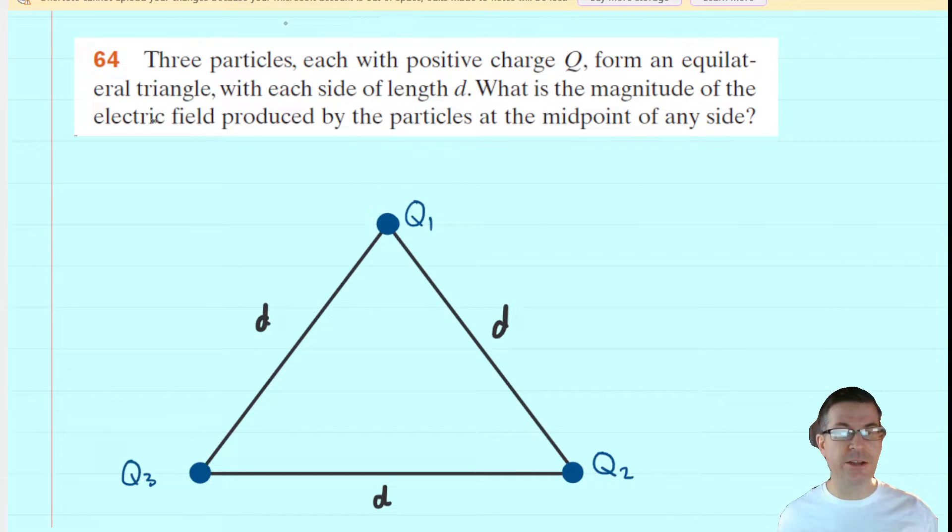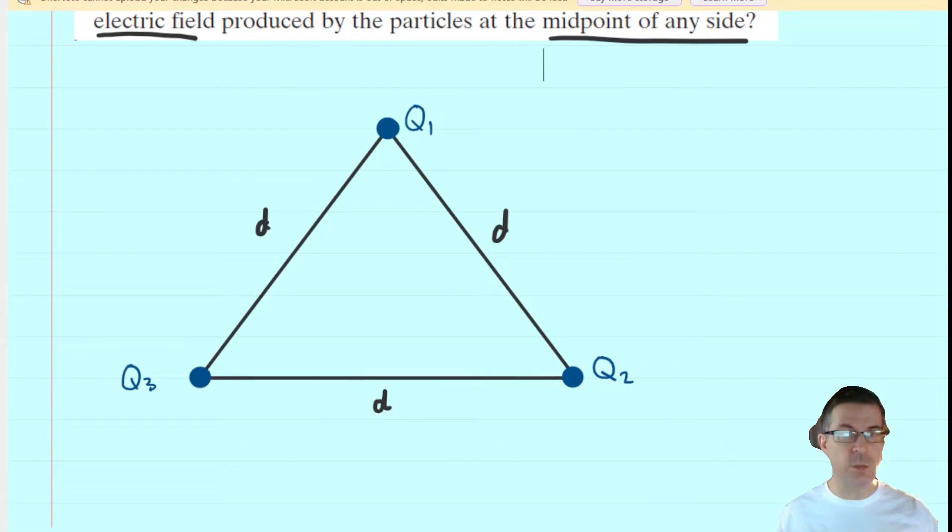Now the question wants us to find the magnitude of the electric field produced by all three of these particles at the midpoint of any side. Because it says the midpoint of any side, we can arbitrarily select any one of the three midpoints of this triangle. So we'll select the midpoint on the far side here and label that right there.